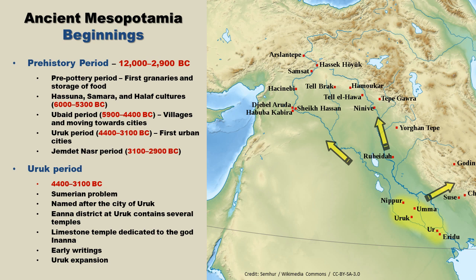At its height, Uruk encompassed an area of six kilometers. Tablets with writing have also been discovered at Uruk — quite possibly the earliest writing in human history. Uruk's prominence also allowed it to spread the concept of urbanization throughout Mesopotamia, referred to as the Uruk expansion.